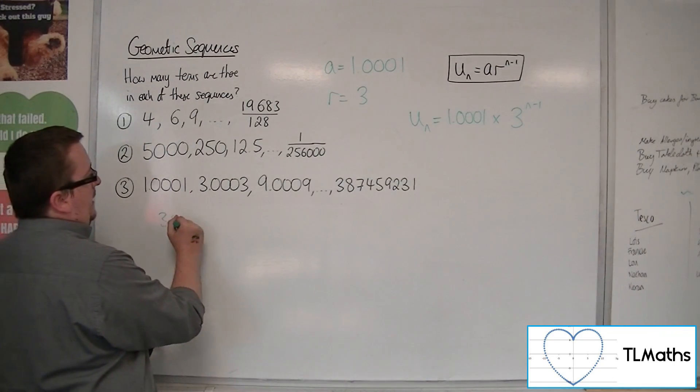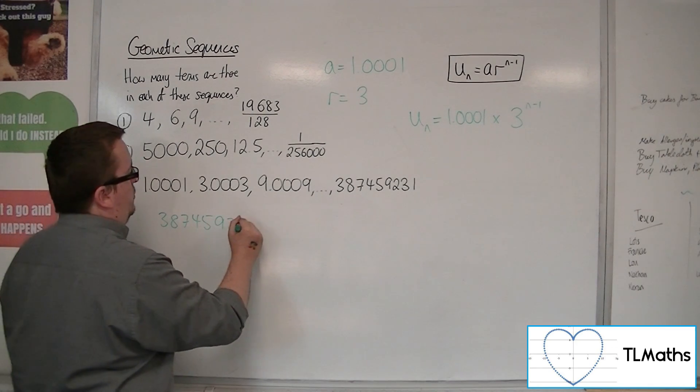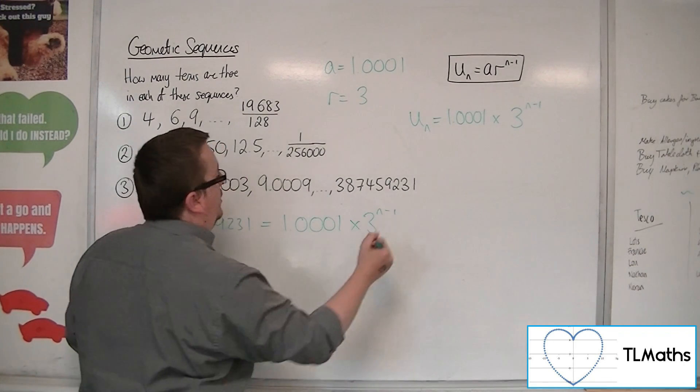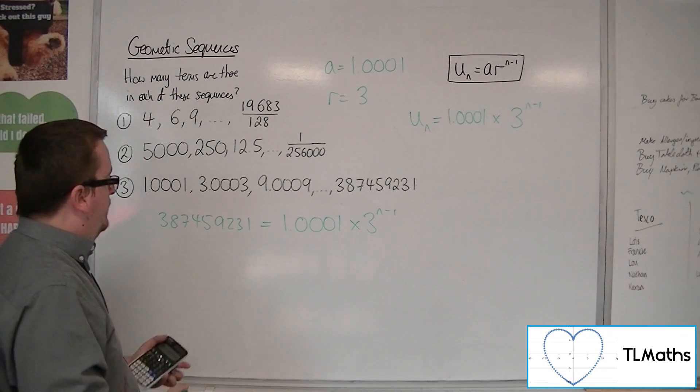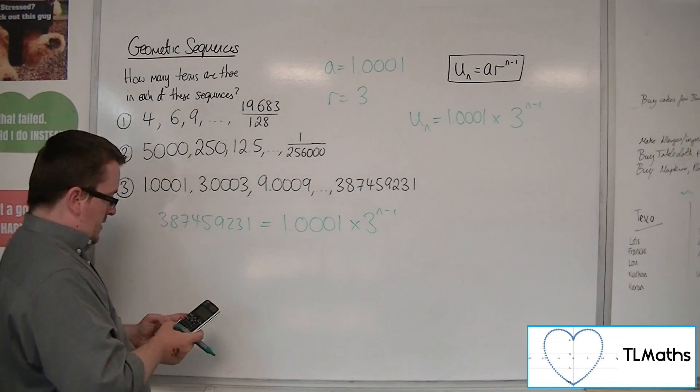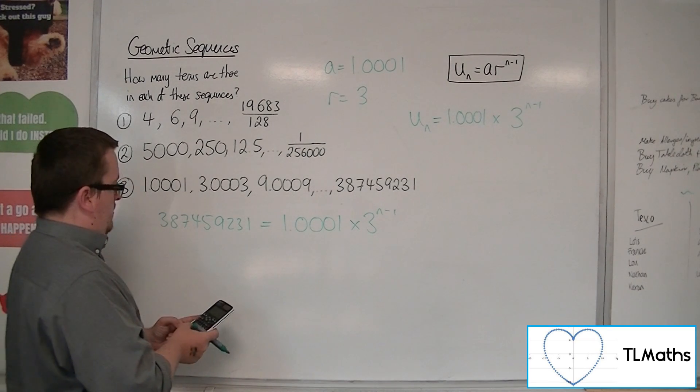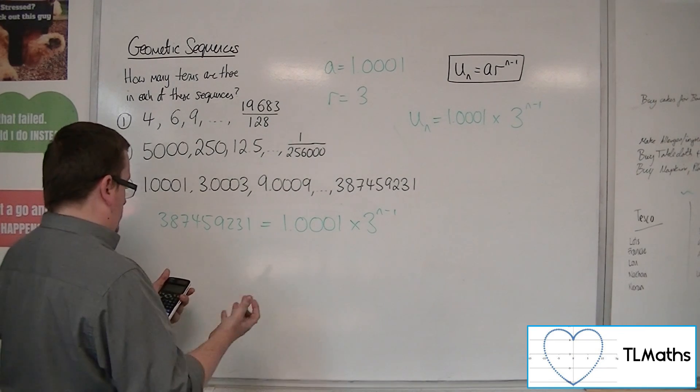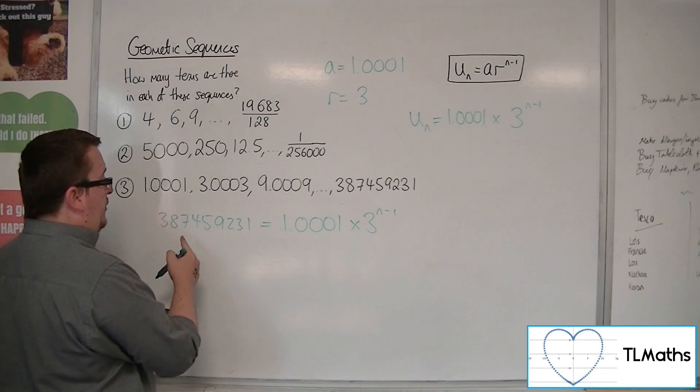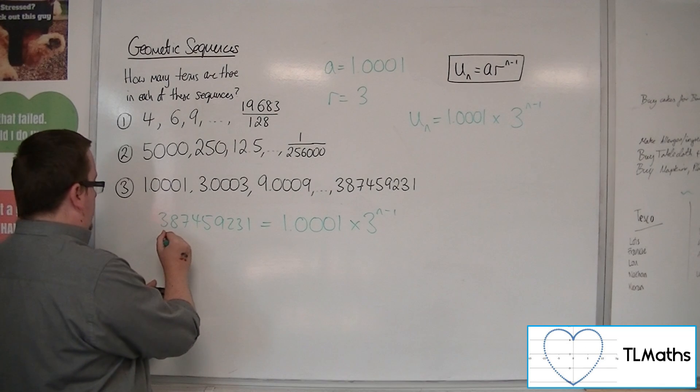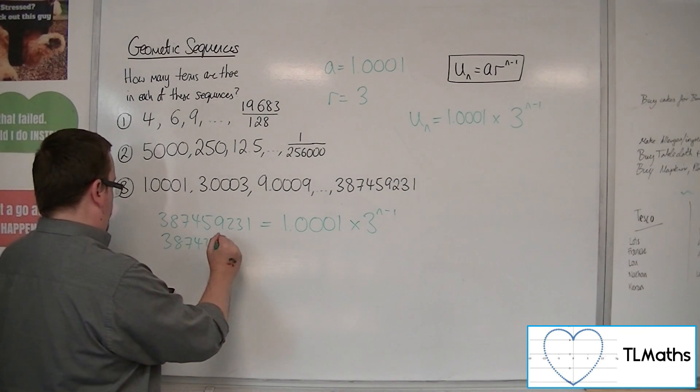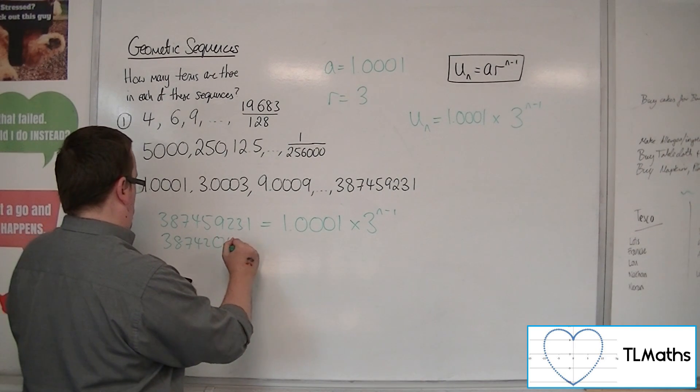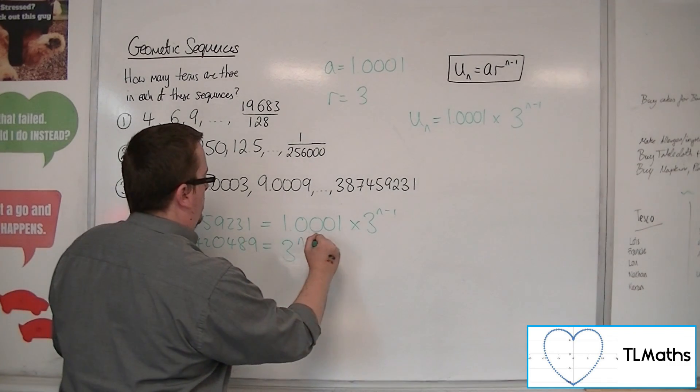So this 387459231 must be 1.0001 times 3 to the n minus 1, and I need to solve this to get n. Now I can't imagine that this is going to give me a nice number, but we'll go for it. So, oh, not too bad. So dividing both sides by the 1.0001, I get 387420489 is equal to 3 to the n minus 1.